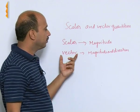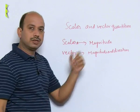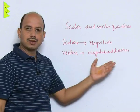So, see for scalars, we just need magnitude. For vectors we need magnitude and direction.